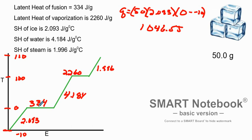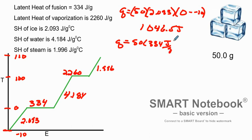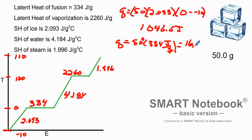At the point where we're melting the ice, we just use the latent heat. q equals 50 grams multiplied by 334 joules per gram. The grams cancel out and that gives us 16,700 joules.